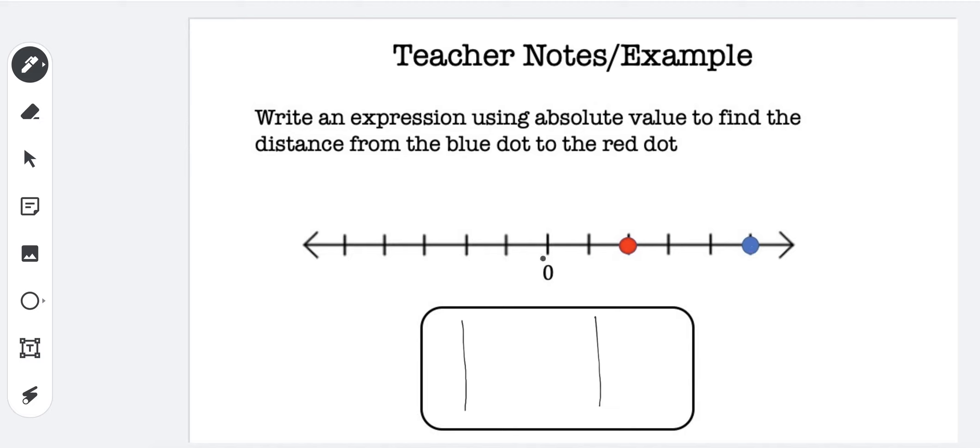That blue dot is one, two, three, four, five, so it's five. We want to know the distance from the blue dot to the red dot, which if you notice the red dot is at one and two. The way you figure out the distance is you subtract them.